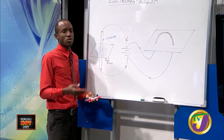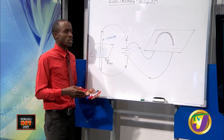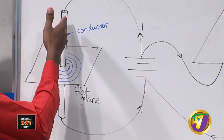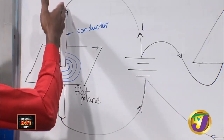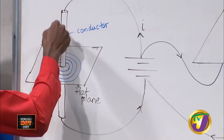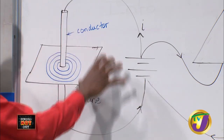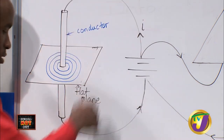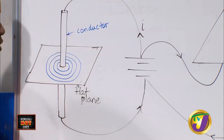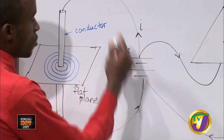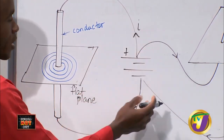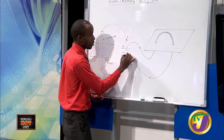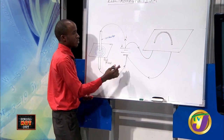Naturally, you would imagine that if they are linked, one creates the other — and it does. What we have here is a situation where a conductor is inserted through a cardboard plane, and then that conductor is connected to some power source. Power sources are usually represented by this diagram. We're going to be looking at this power source.